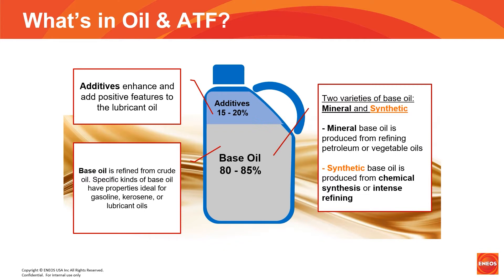Base oils come in two varieties: mineral and synthetic. Mineral oil is produced from refining petroleum or vegetable oils, and synthetic is produced from a chemical synthesis or intense refining. Also, specific types of base oils have ideal properties for gasoline, kerosene, or lubricants. Additives then enhance and add positive features to base oils.